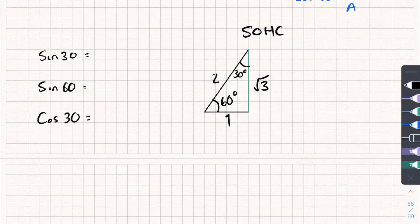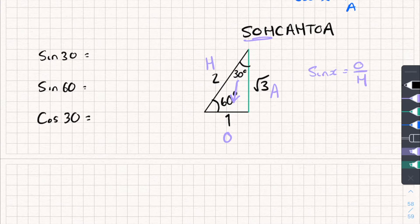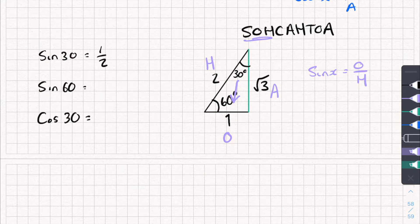So how does this triangle help me? Say I want to calculate sine 30. Writing out SOH-CAH-TOA: sine of my angle equals opposite over hypotenuse. I'm interested in the 30-degree angle, so opposite that is 1, and the hypotenuse is 2. So sine 30 equals 1 divided by 2, which is one half.